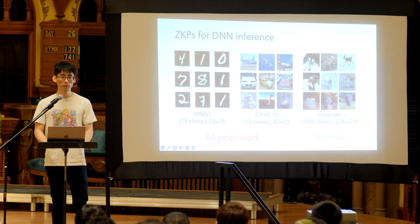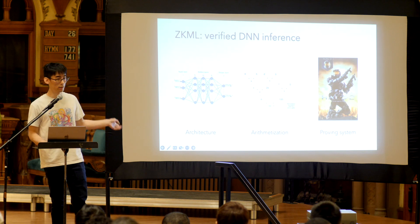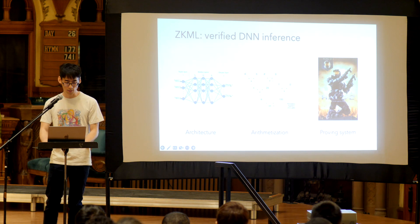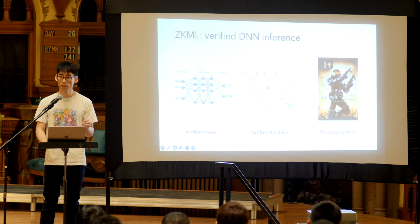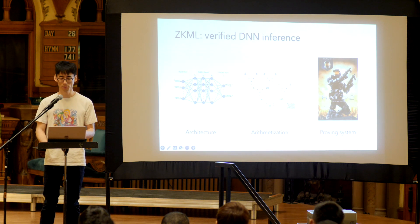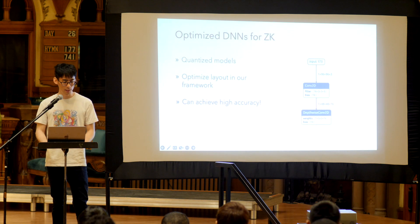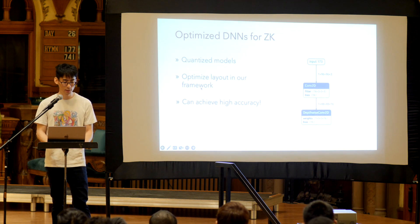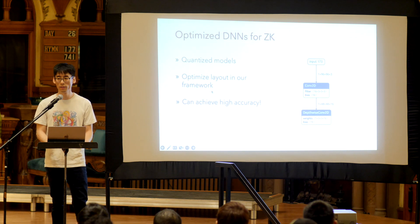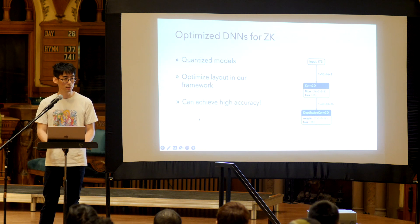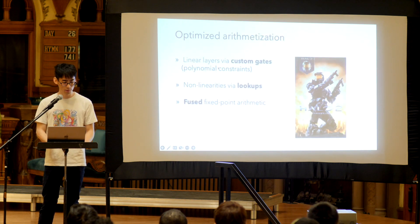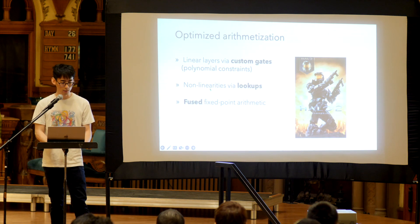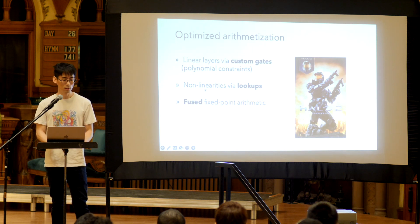When designing zero-knowledge machine learning proving techniques, there are many things to consider, including the model architecture on the ML side, the arithmetization on the compilation side, and also the proving system itself — certain proving systems are more amenable to machine learning computations. In our framework ZKML, we optimized deep neural networks for zero-knowledge proofs using quantized models and highly optimized layouts. We're somewhere between 100 to 100,000 times faster than some prior work in this space and can also achieve high accuracy. For arithmetization, we use custom gates for linear layers, lookups for non-linearities, and basic operator fusion for improved performance.